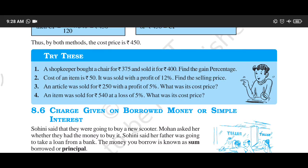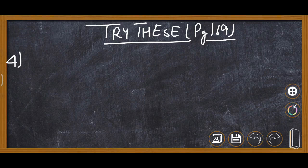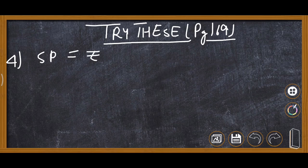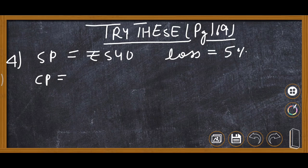Question number 4: An item was sold for rupees 540 at a loss of 5 percent. What was its cost price? Here loss is given, so we apply the formula: CP = 100 upon (100 minus loss percent), multiplied by SP. SP is rupees 540 and loss percent is 5 percent.